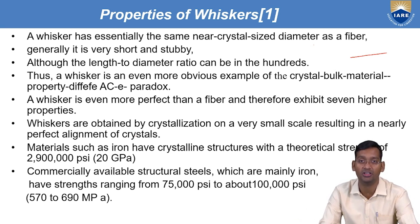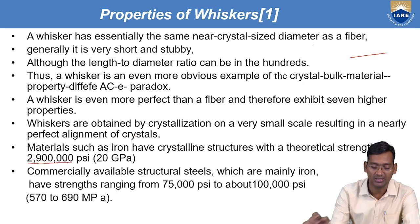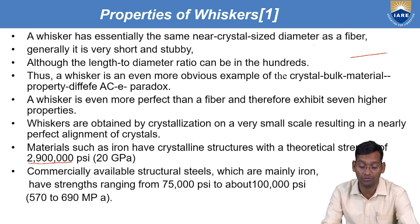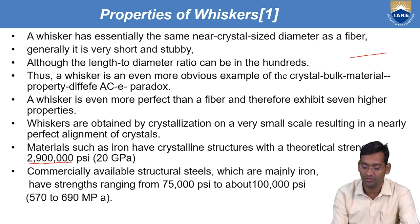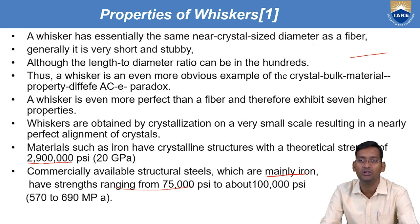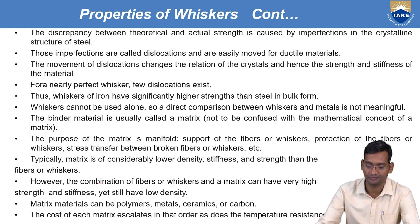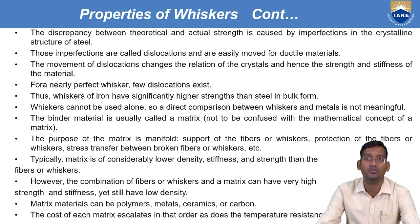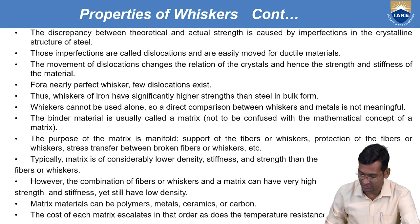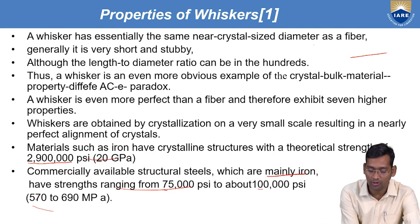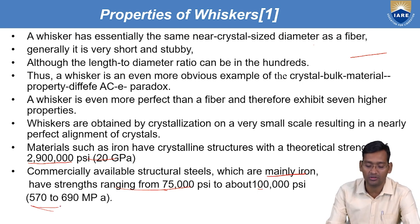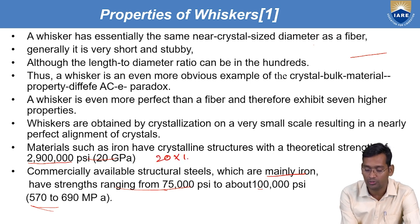Materials such as iron have a crystalline structure with theoretical strength of 20 GPa, or 29 lakh PSI. Commercially available structural steel, which is mainly iron (more than 99% iron), has a strength ranging from 75,000 PSI to about 1 lakh PSI — that is 570 to 690 MPa. So the discrepancy between theoretical and actual strength: theoretical is 20 GPa, whereas we are getting only 570 MPa.